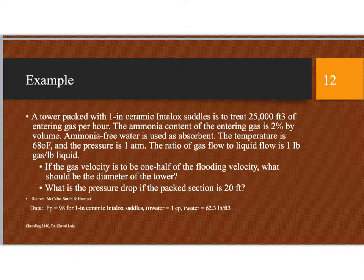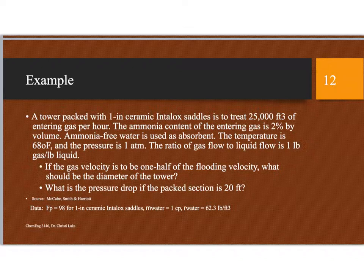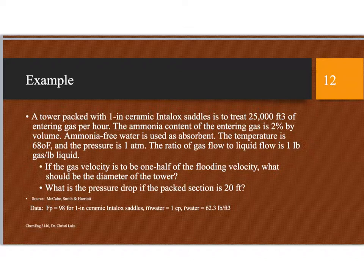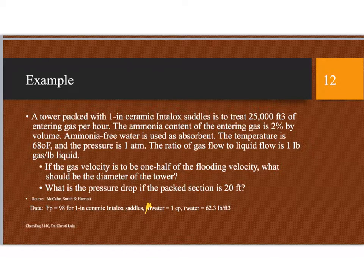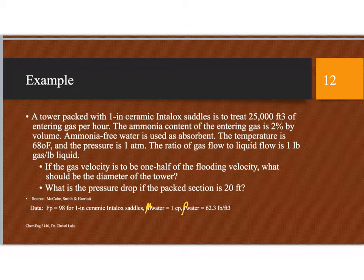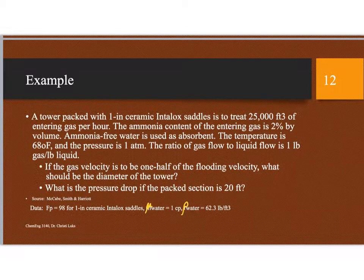And if the gas velocity should be one half of the flooding velocity, what should we use as the diameter of the tower? And what will be the pressure drop if the packed section is 20 feet tall? And data for our one inch ceramic Intelox saddles, the packing factor is 98. The viscosity for our water is 1 centipoise, and the density for our water is 62.3 pounds per cubic feet. So let's look at the solution.